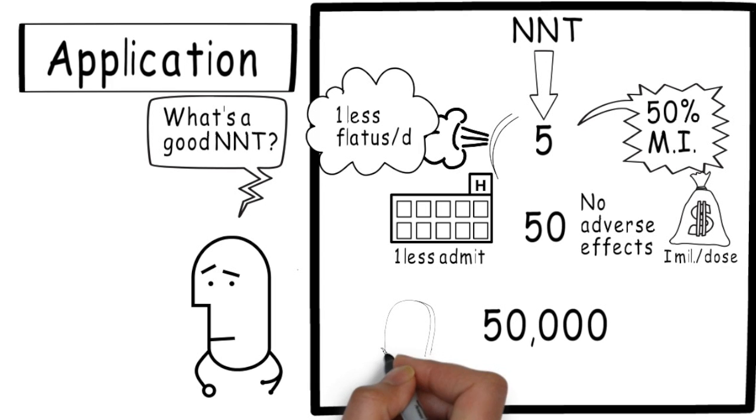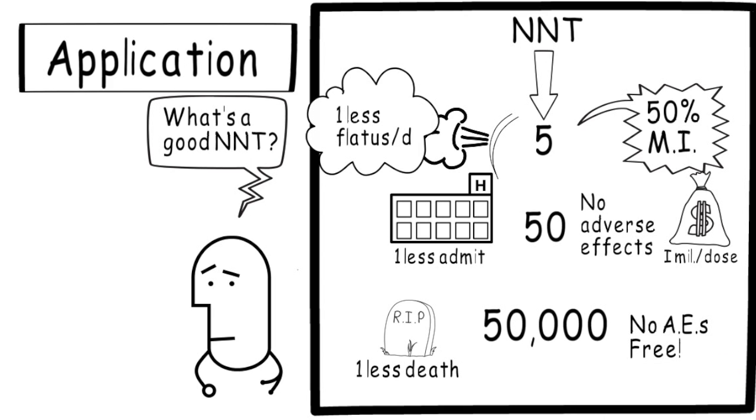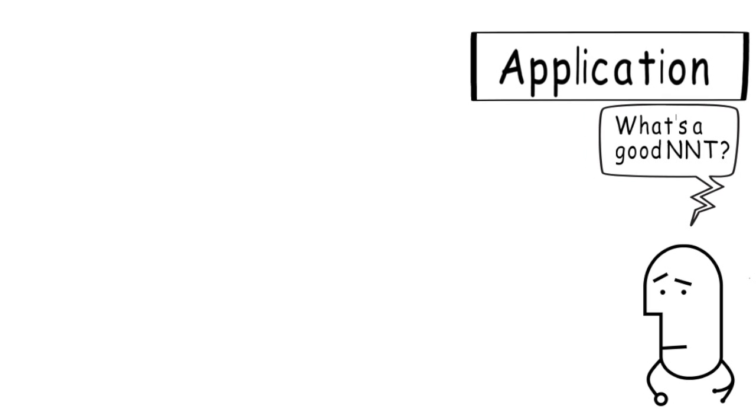In our final study, the NNT is 50,000. In this case, the benefit is one less mortality. For every 50,000 patients treated with this intervention, one doesn't die. In this case, there are no adverse effects, and the therapy is free. You would argue that everybody should be doing this, even with such a high NNT. A number of public health initiatives fall into this category of significant benefit, minimal harm and cost, but higher NNTs.